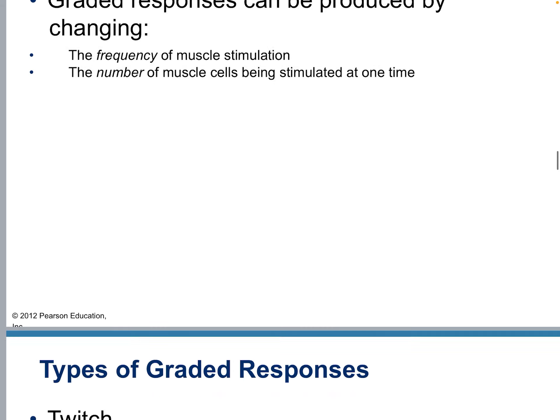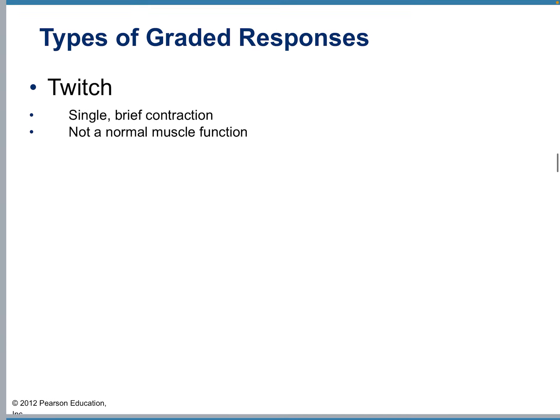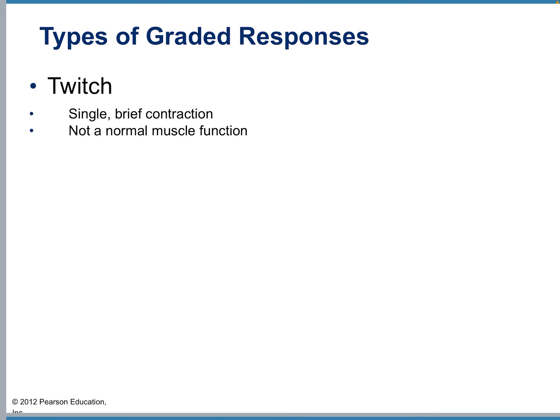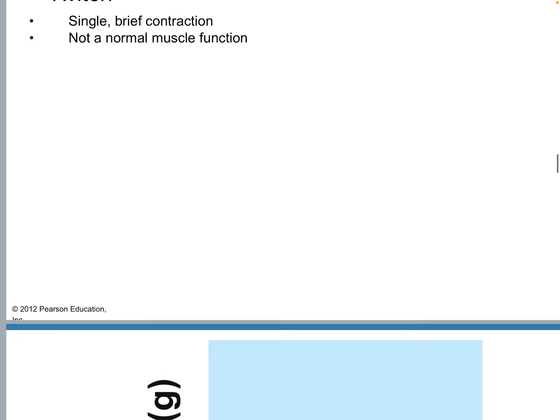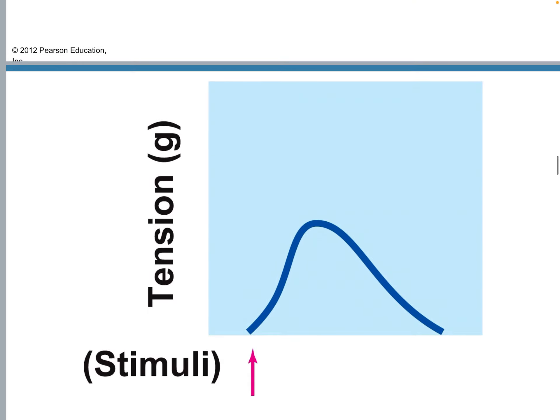The shortest, briefest one is a muscle twitch — a single, brief contraction. It's not a normal muscle function. Many of you have had muscle twitches where you feel a weird jumping of the muscle beneath your skin. That's a muscle twitch. You get a single stimulus and then it comes back down — a very quick reaction.